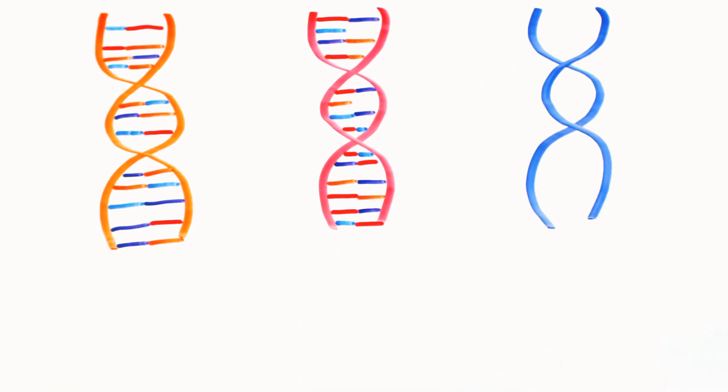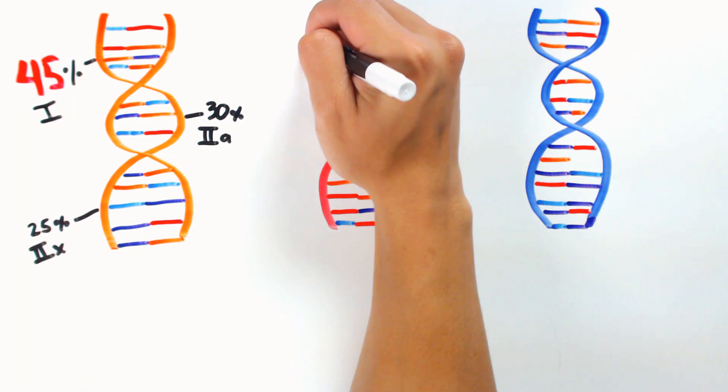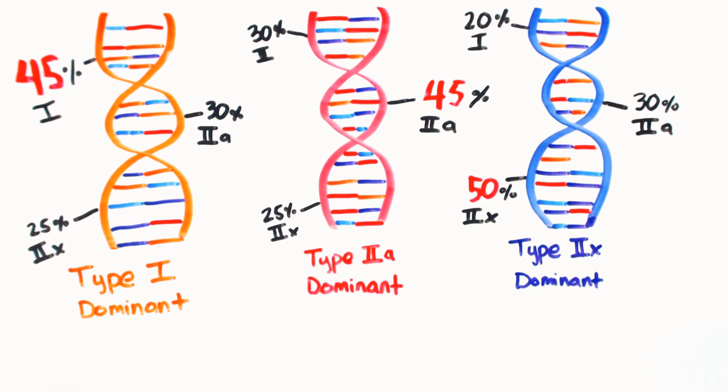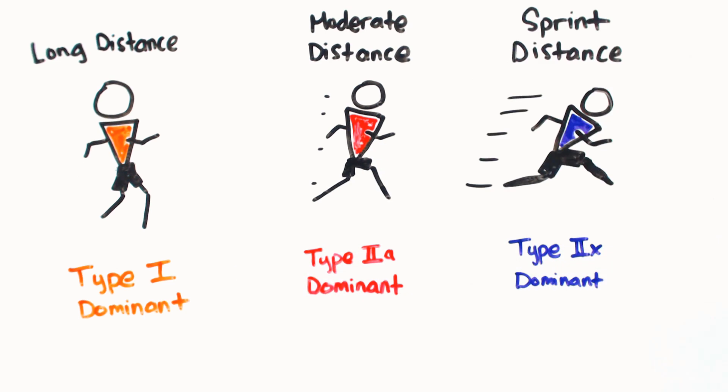Everyone has a genetically determined amount of each muscle fiber type. Some people are born with a predominant amount of a certain muscle fiber, making them effective with activities that favor those fibers.